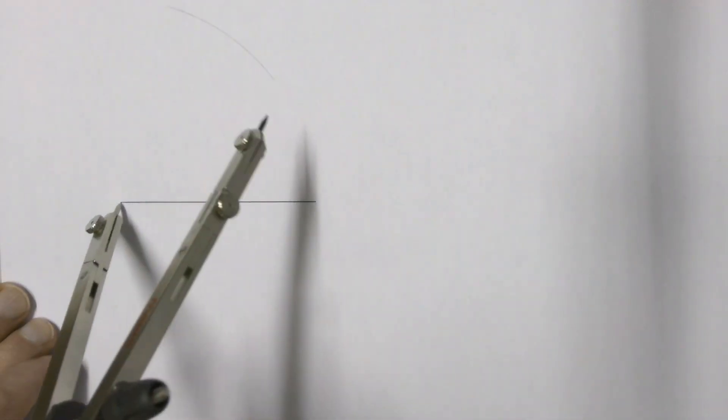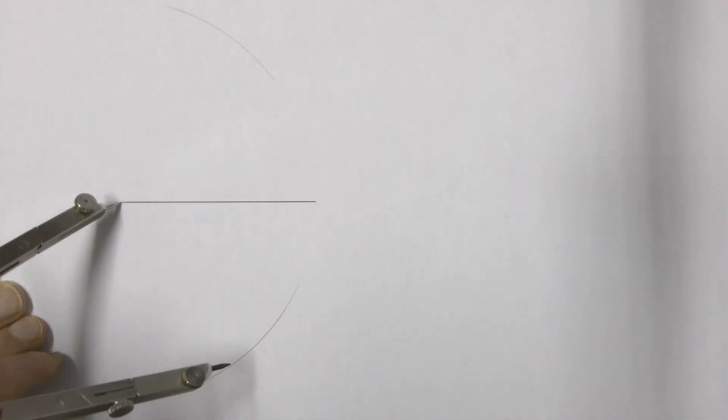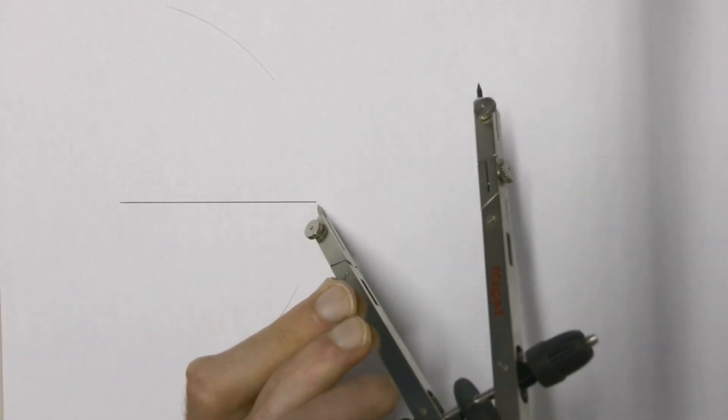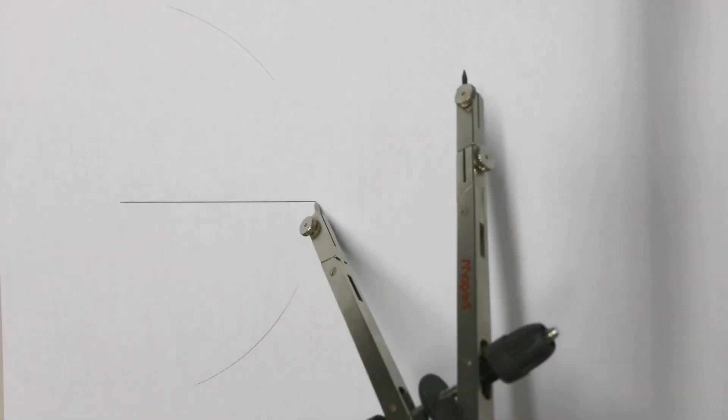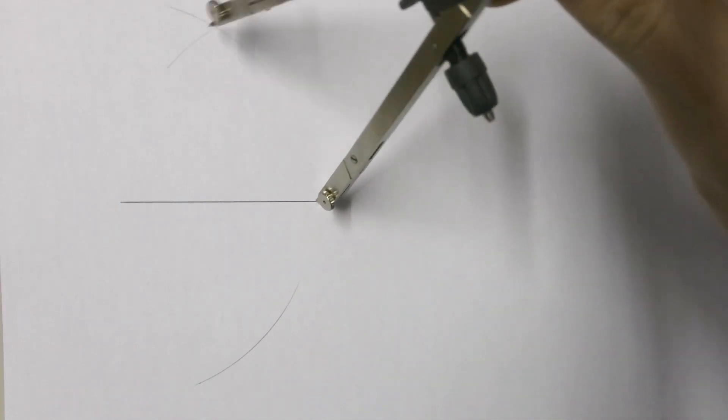arc above the line and then draw another arc below the line. Then take our compass on the same size, put it on the other side of the line, and draw an arc again above the line so that it intersects with